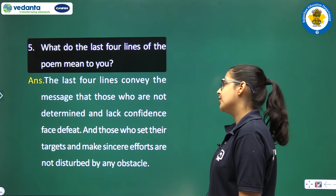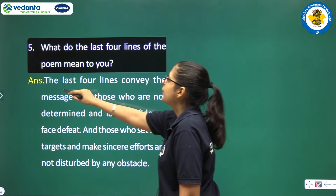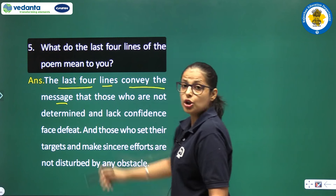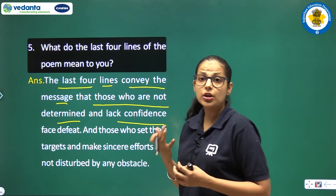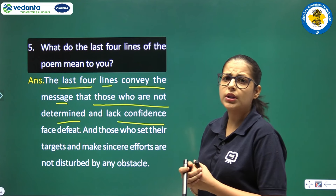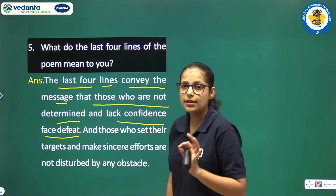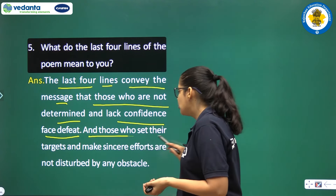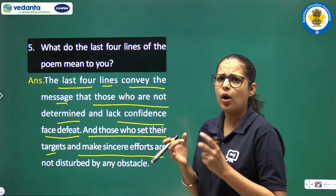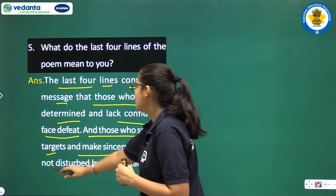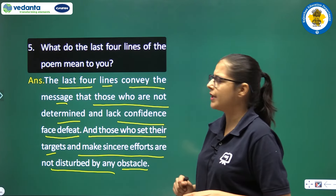The fifth question: What do the last four lines of the poem mean to you? The last four lines convey the message that those who are not determined and lack confidence always face defeat. But those who set their targets and make sincere efforts are not disturbed by any obstacles.